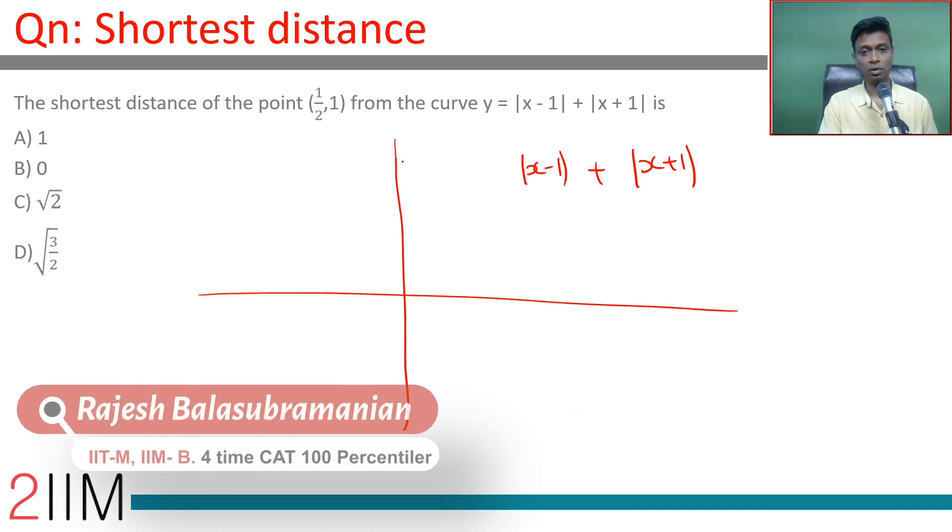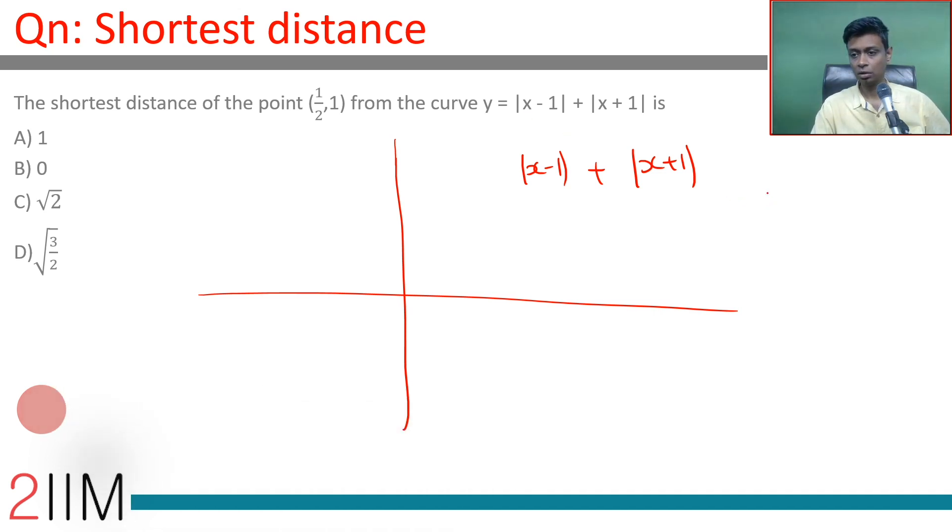From the point (1/2, 1) to this curve, let's put 1/2 into this. If you put x = 1/2, we get |1/2 - 1| + |1/2 + 1|, which is 1/2 + 3/2. So y should be 2. The point (1/2, 2) is on this line.